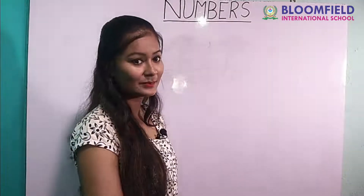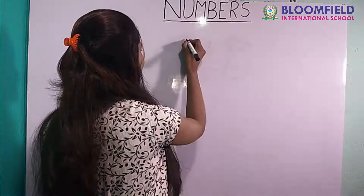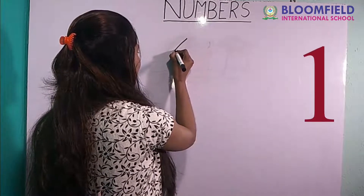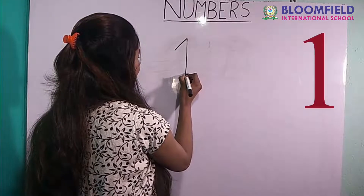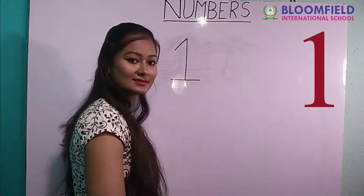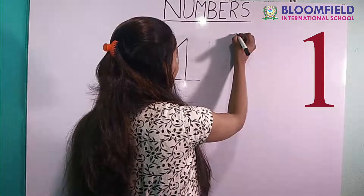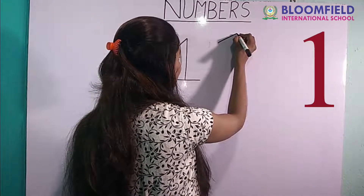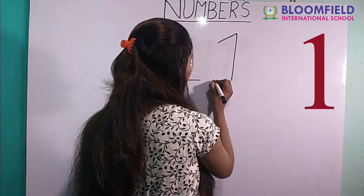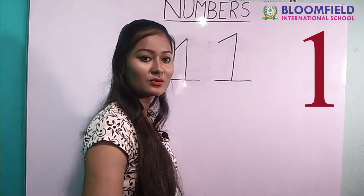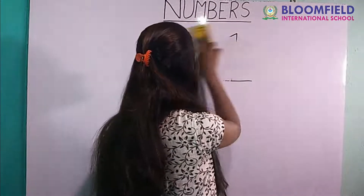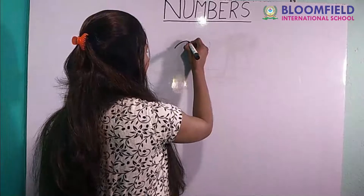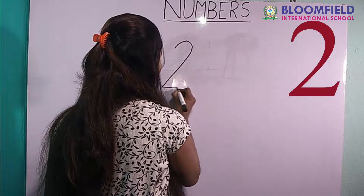Hello kids, now we will learn numbers. So let's start — listen carefully and look at me. Slanting line, one is standing line, that's sleeping line. One slanting line, one is standing line, sleeping line. One.